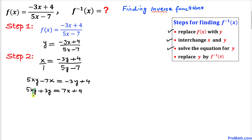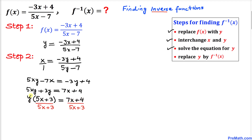We can see that y is a common factor on the left side. Let's factor it out: y times the quantity 5x plus 3 equals 7x plus 4.